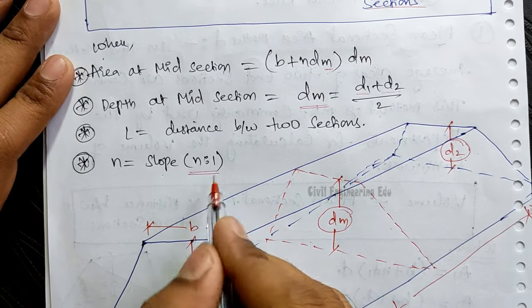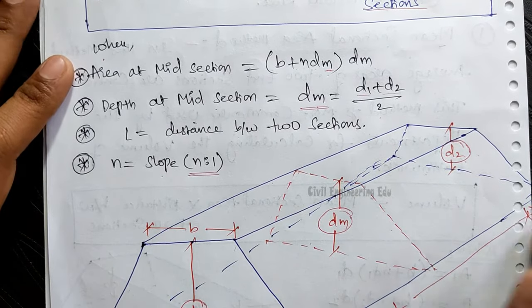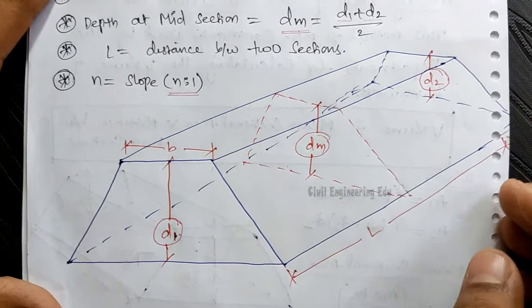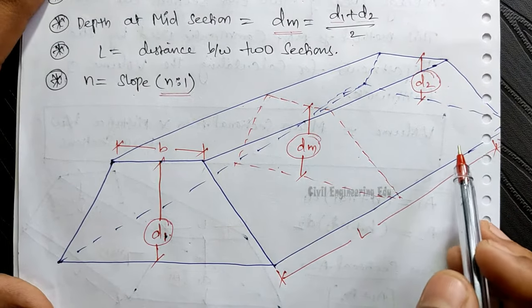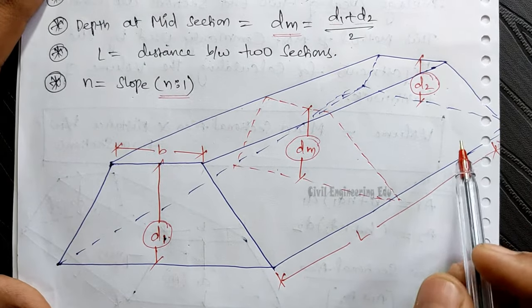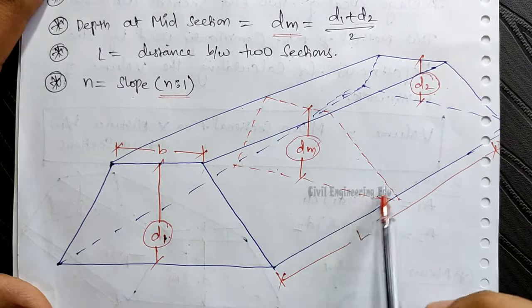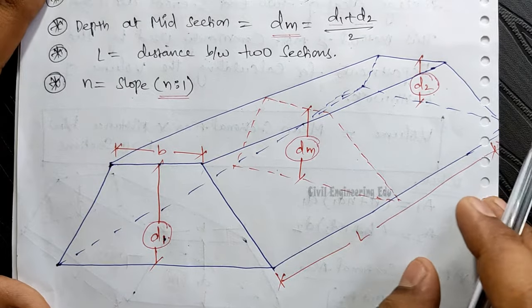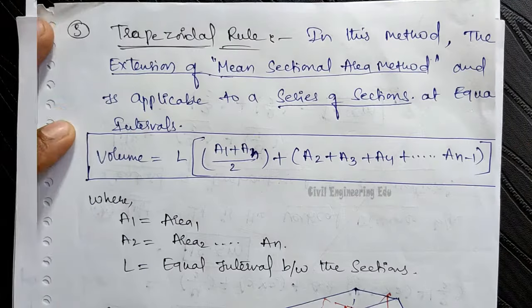The slope is mentioned in the question. This is the second method — mid-sectional area method — and it is very simple. In this method we consider the mid-sectional area.